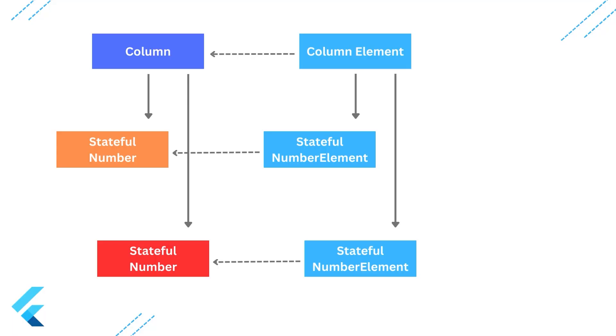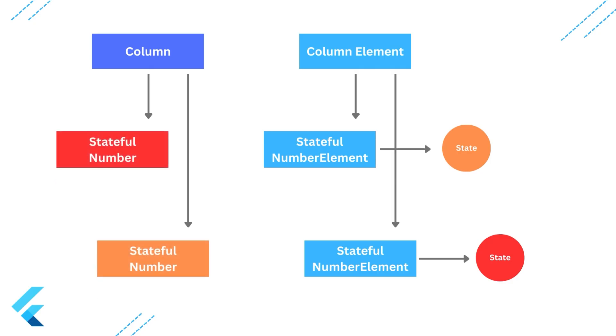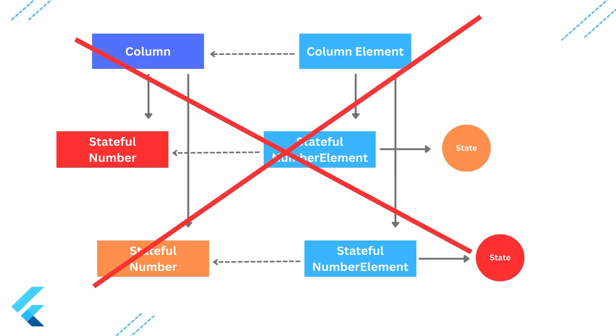Now let's see what happens when we change StatelessNumber widgets to StatefulNumber widgets. In the case of stateful widgets, a State object is paired with each element, and the number is stored in the State rather than the widget itself. When the widget swaps, the canUpdate method is called again — it checks types and keys. Since there are no keys and the types are the same for both children, Flutter uses the element tree and corresponding state to determine what to display. The state remained unchanged, so we didn't get the expected result — the widgets didn't properly swap.